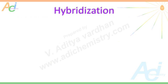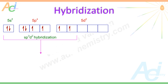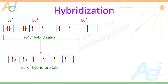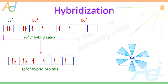Now moving on to the hybridization part. According to Linus Pauling, who proposed valence bond theory, atoms may undergo hybridization before bond formation to confer more stability to the molecule. In this case, xenon undergoes sp3d2 hybridization by mixing 1s, 3p, and 2d orbitals in the second excited state. Thus, we get six sp3d2 hybrid orbitals arranged in octahedral geometry.